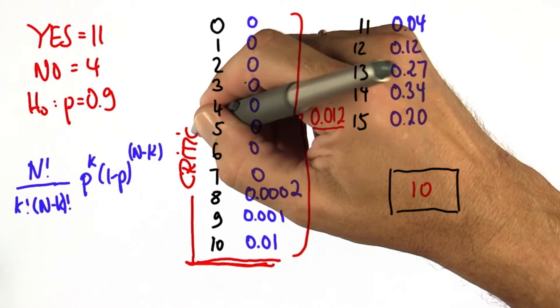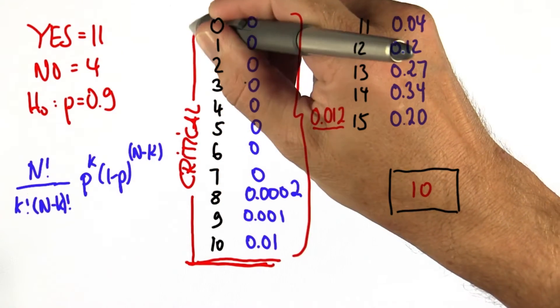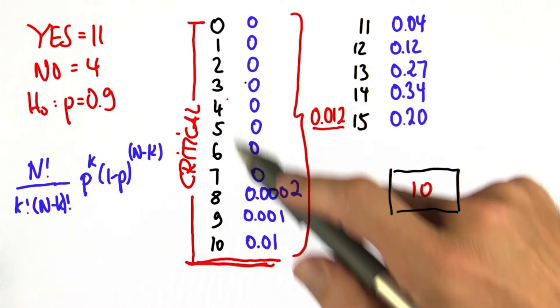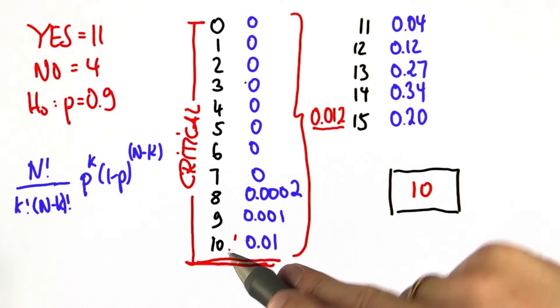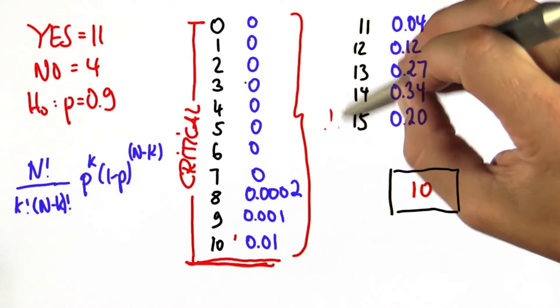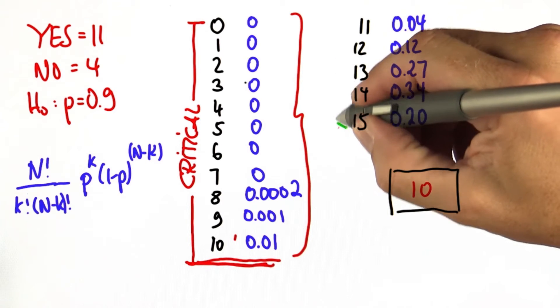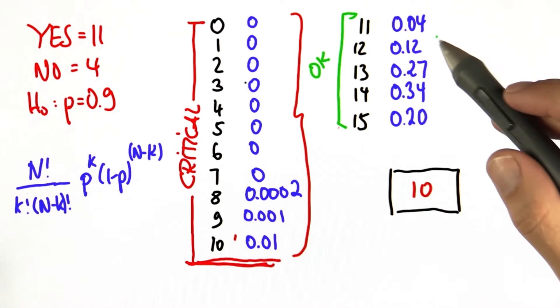So this is where we draw the line. Any outcome over here is critical. That means for any of those outcomes, we'd be so surprised that we reject the null hypothesis, whereas any outcome in the region over here is okay. So we accept it.